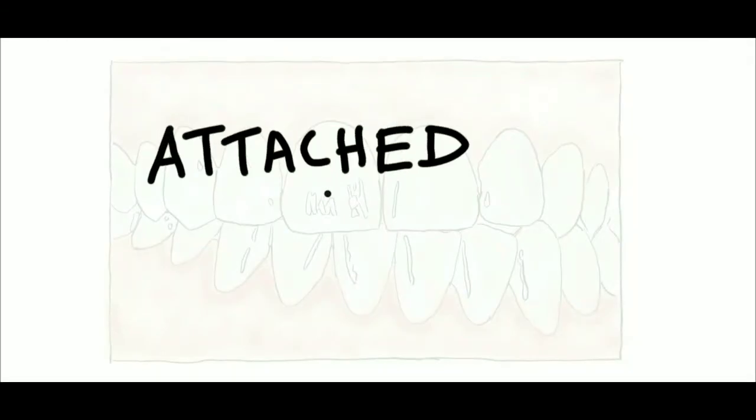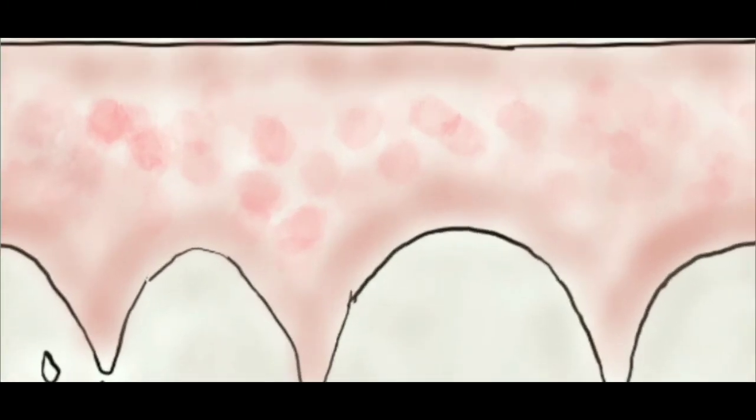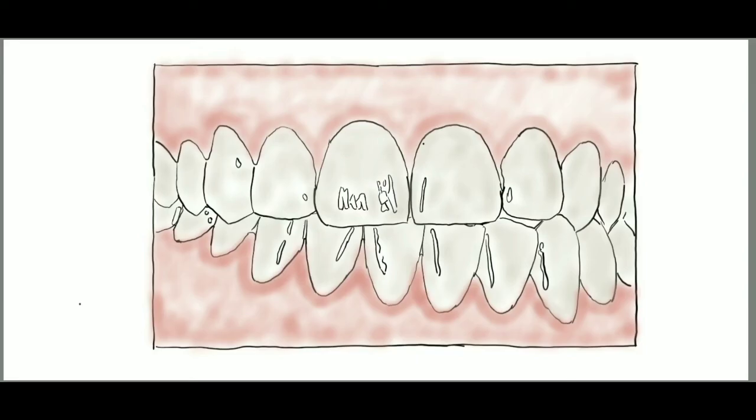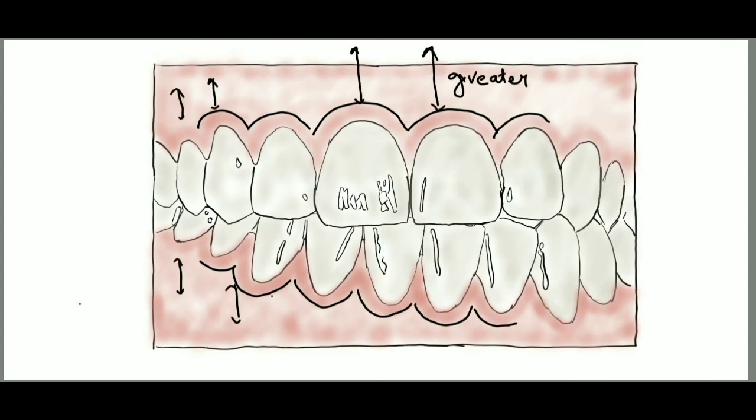Next is attached gingiva. We already know what attached gingiva is. Besides that, in 40% of the attached gingiva, stippling is seen. The width of the attached gingiva is a very important clinical parameter as it differs on the facial aspect in different areas of the mouth.